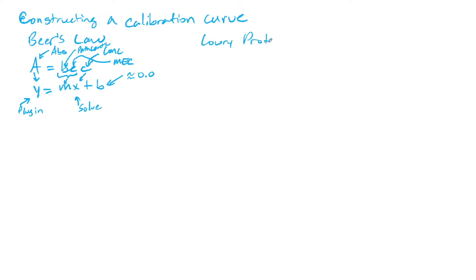So what that means is that if we create a line with known standard concentrations or amounts, and then we have an unknown, we can get the absorbance of the unknown, plug in for Y, and then solve for X. X is the concentration — that's how you get the unknown concentration of the sample. So let's look at the data. In class, this data comes from using the Lowry method, also known as a Lowry protein assay.